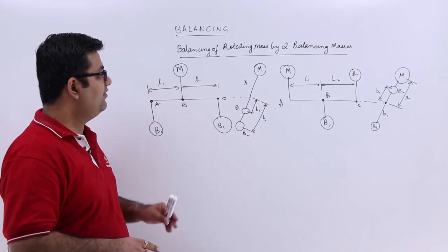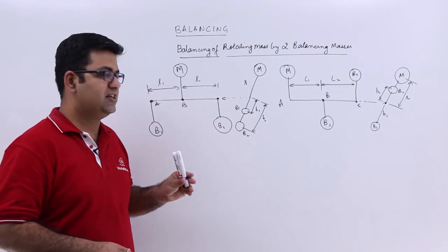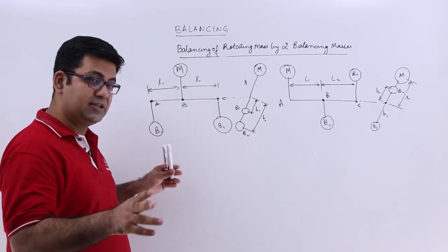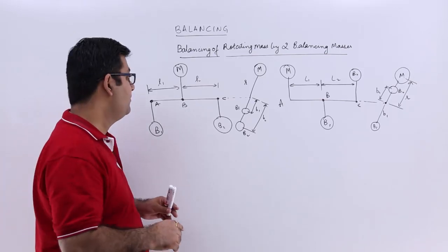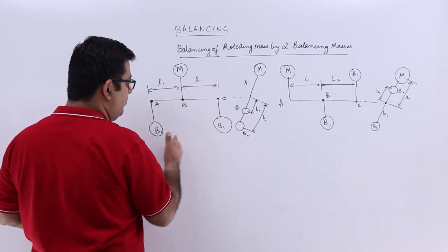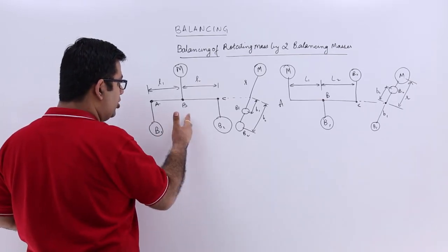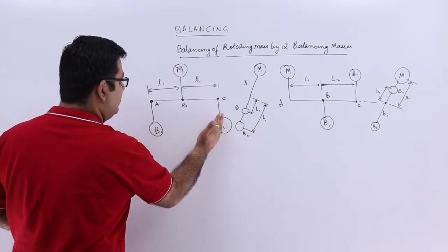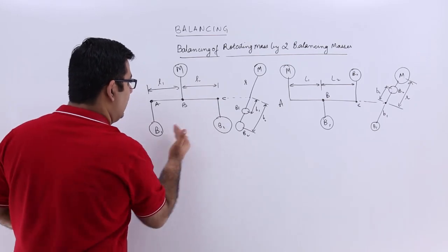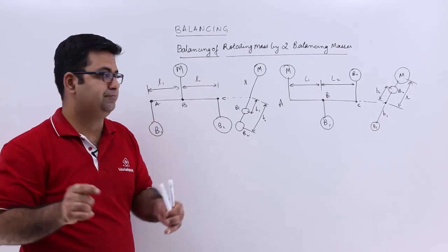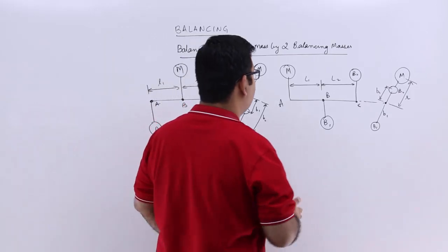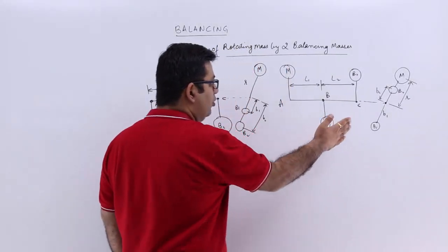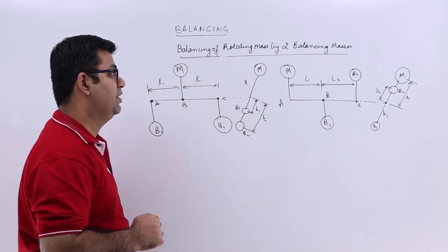Now let's talk about the case in which we cannot put the balancing mass in the same place as the disturbing mass. In this case we can have two sub-cases: when the two balancing masses are on opposite sides of the disturbing mass, or when the balancing masses are on the same side of the disturbing mass.